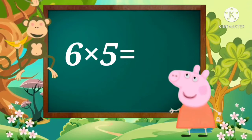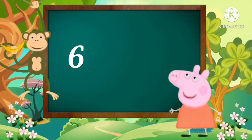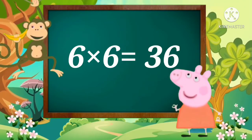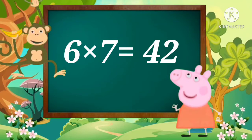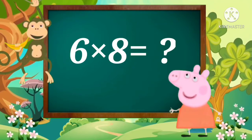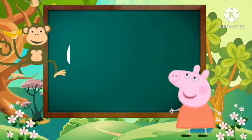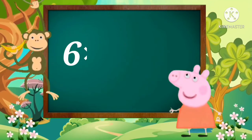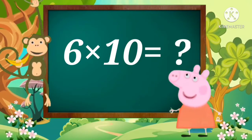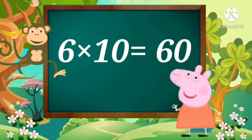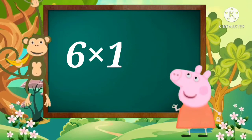Six fives are thirty. Six sixes are thirty-six. Six sevens are forty-two. Six eights are forty-eight. Six nines are fifty-four. Six tens are sixty.